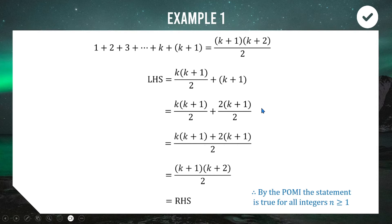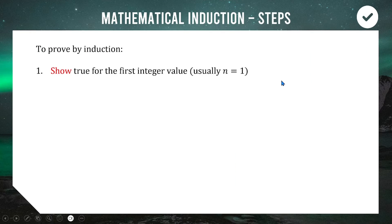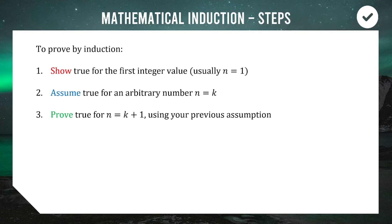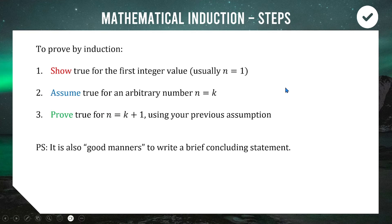To summarize: step 1 is showing n=1 works; step 2 is assuming n=k holds true; step 3 is proving n=k+1 works using the assumption from step 2. Good manners is to write a concluding statement at the end — 'therefore true by the principle of mathematical induction.' You should always conclude that you've proven the statement true using induction for it to be a fully rounded proof. Let's not gamble on losing a mark — just always write that little statement.